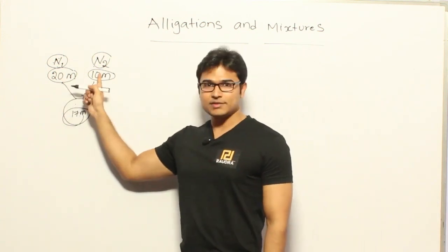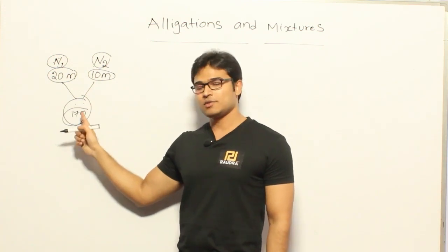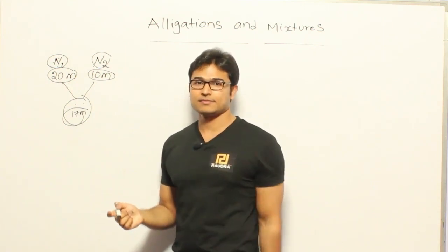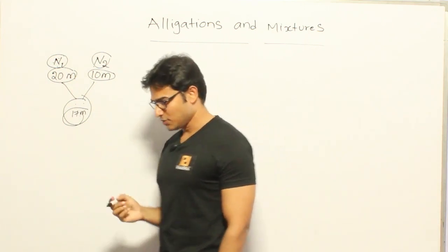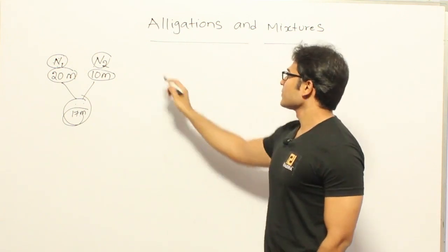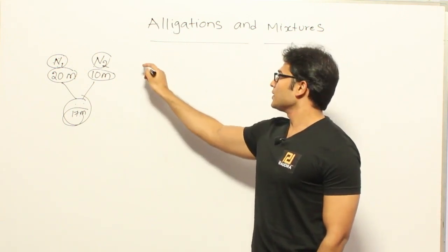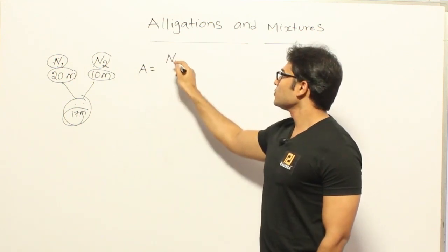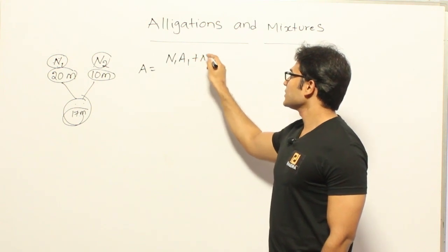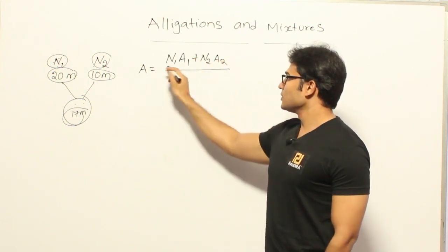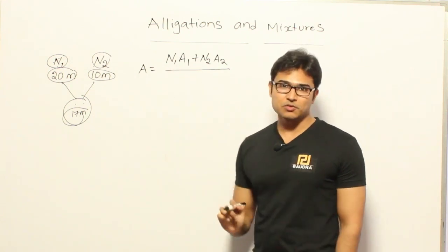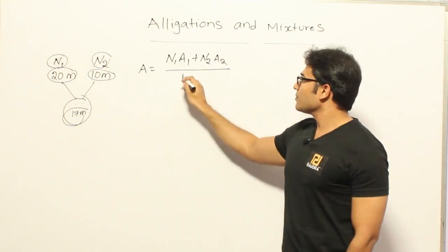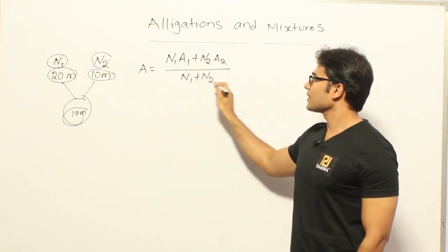Given two averages and the group average, you are supposed to find out what is the ratio in which I should mix the items so that I will get that group average. In the earlier formula, if you assume that A is the group average, A equal to N1 into A1 plus N2 into A2, so this is the total contribution from the first group, and this is the total contribution from the second group, divided by N1 plus N2.